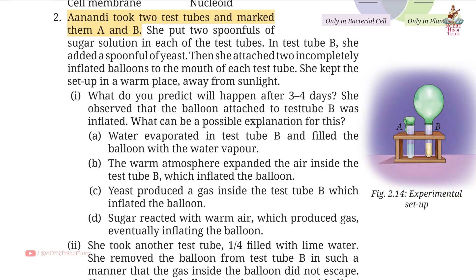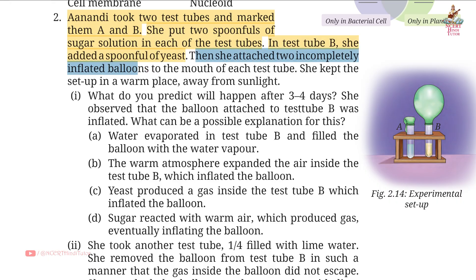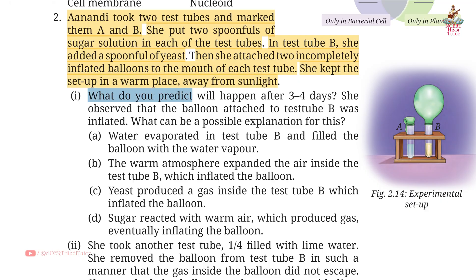Question 2: Anandi took two test tubes marked A and B. She put two spoonfuls of sugar solution in each. In test tube B she added a spoonful of yeast, then attached two incompletely inflated balloons to the mouth of each test tube and kept the setup in a warm place away from sunlight.